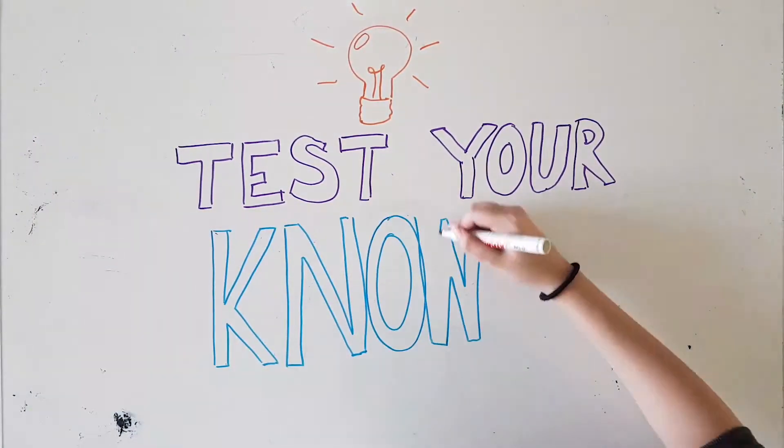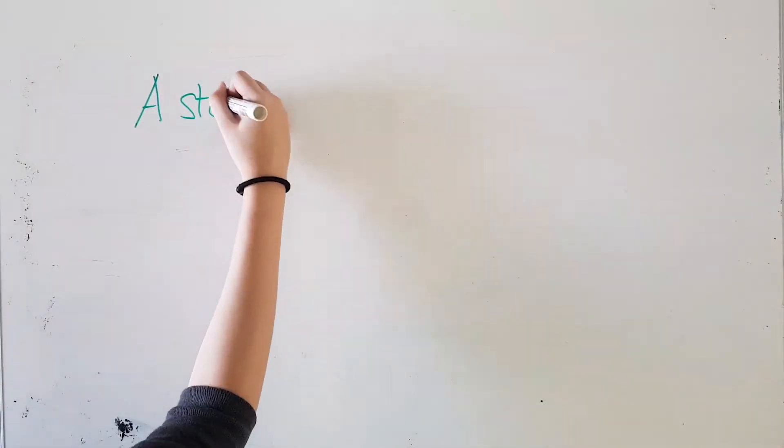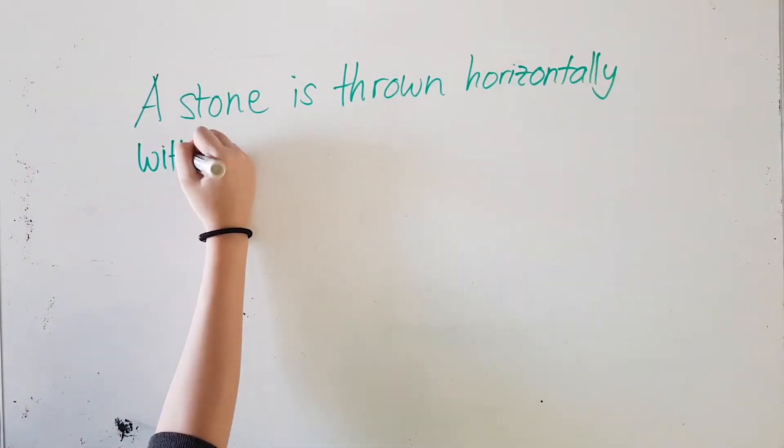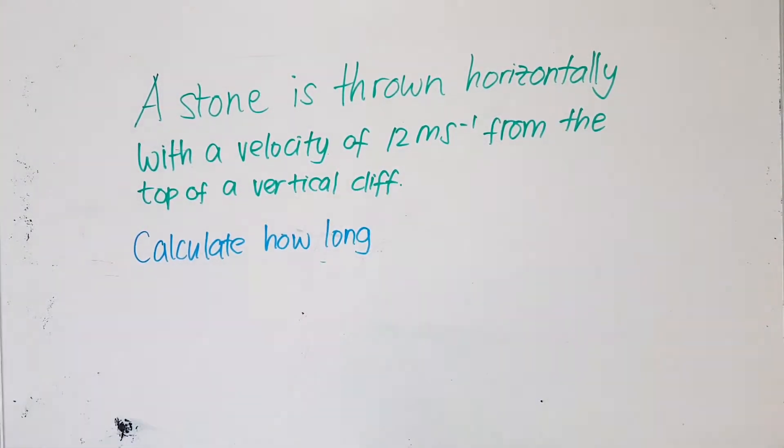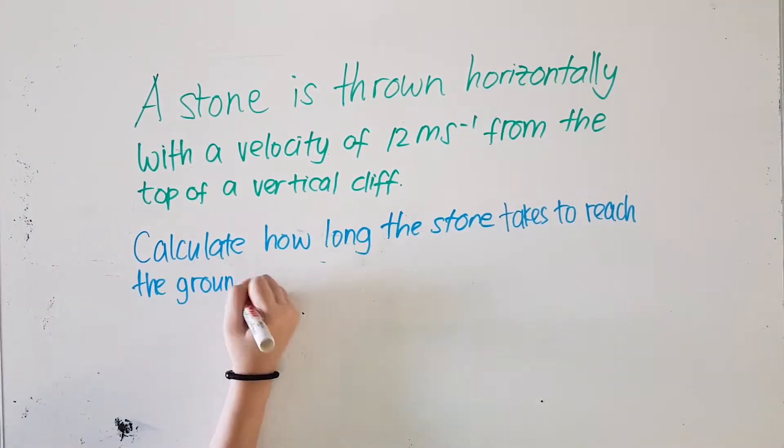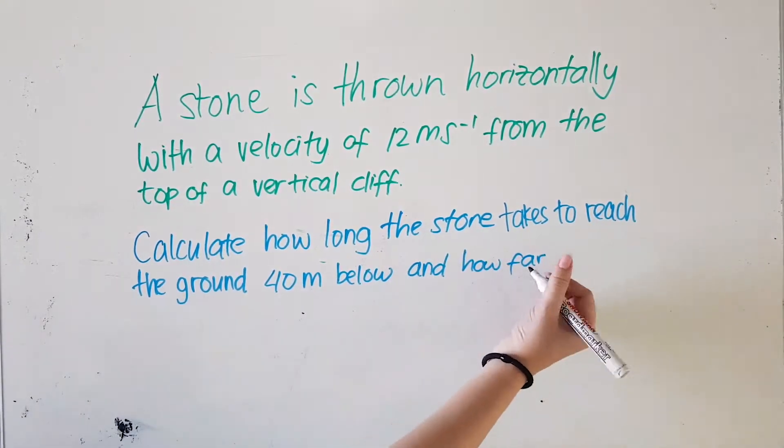Now, let's have a quick test, shall we? If a stone is thrown horizontally with a velocity of 12 meter per second from the top of a vertical cliff, how long does the stone take to reach the ground 40 meter below and how far does the stone land from the base of the cliff?